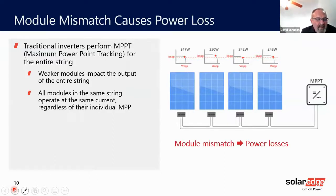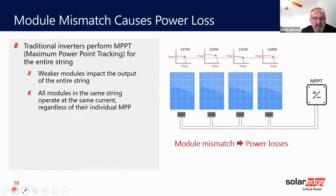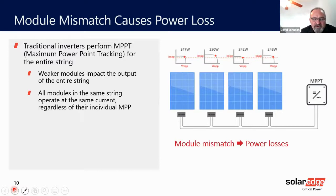Why? Each module has its own optimal working point, as you can see in the illustration here. If you only remember one thing from today's presentation, remember that module mismatch means you're losing money. Since the modules are connected in series, the weakest module will drag all of the others down — they will have to produce power according to its working point, which is lower than theirs.